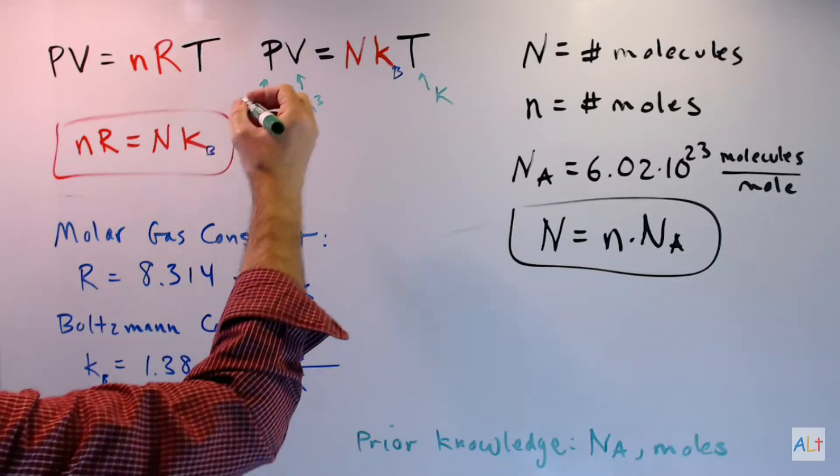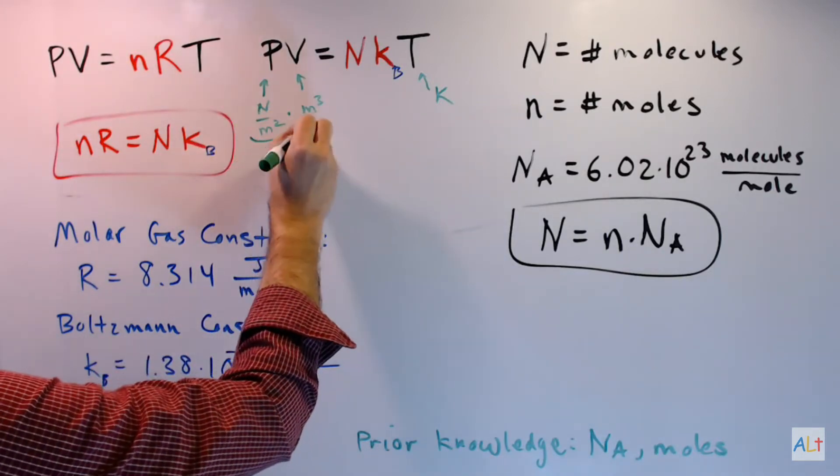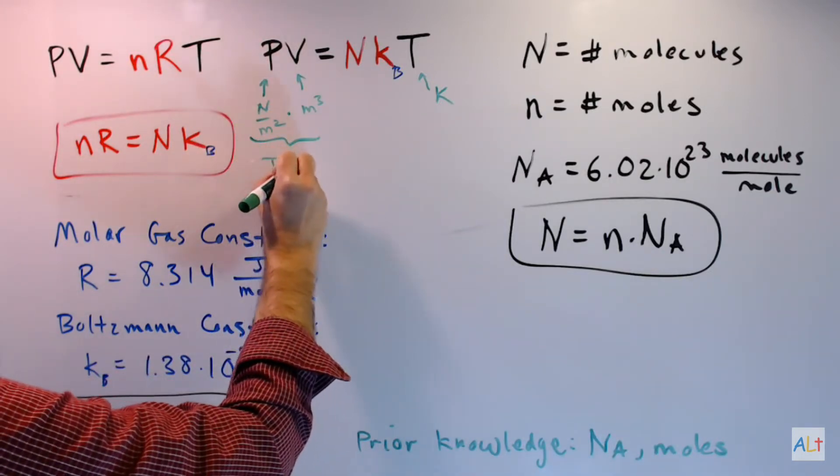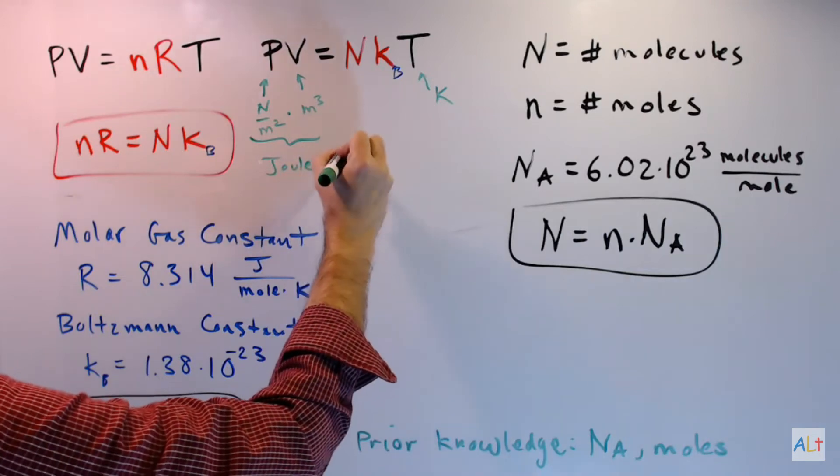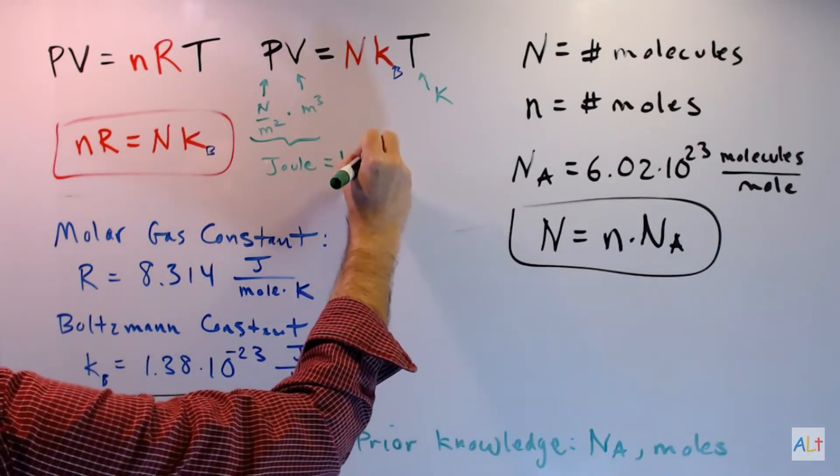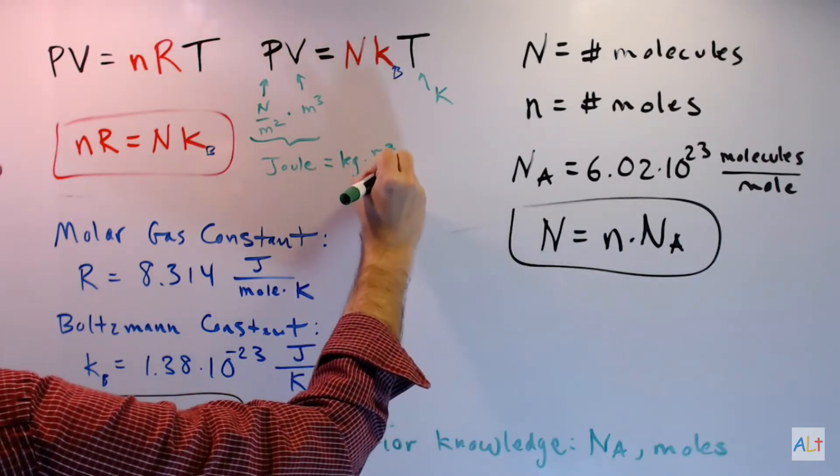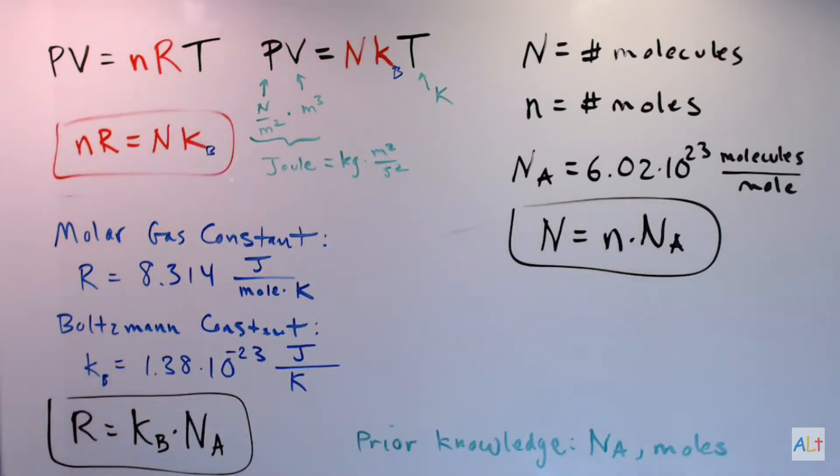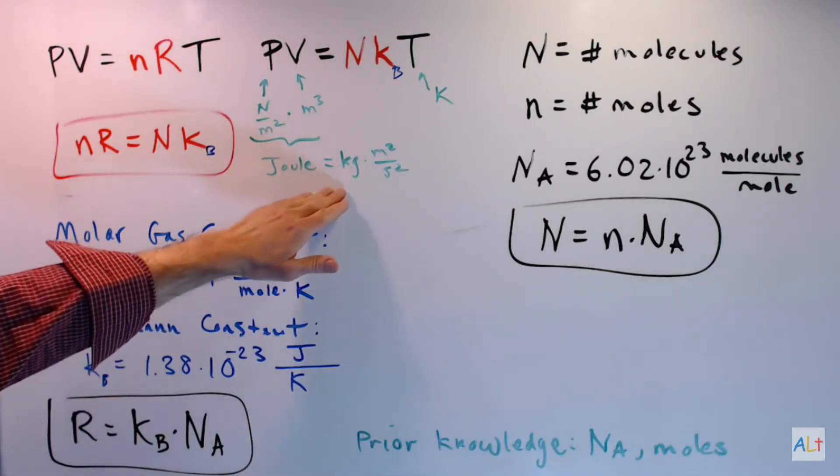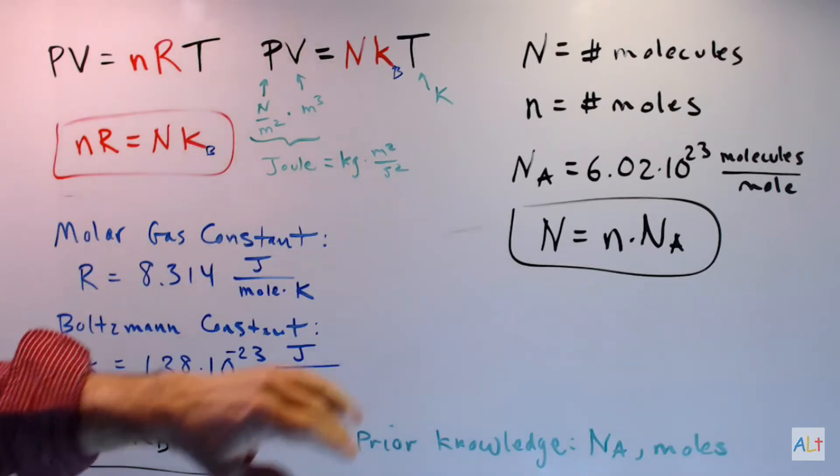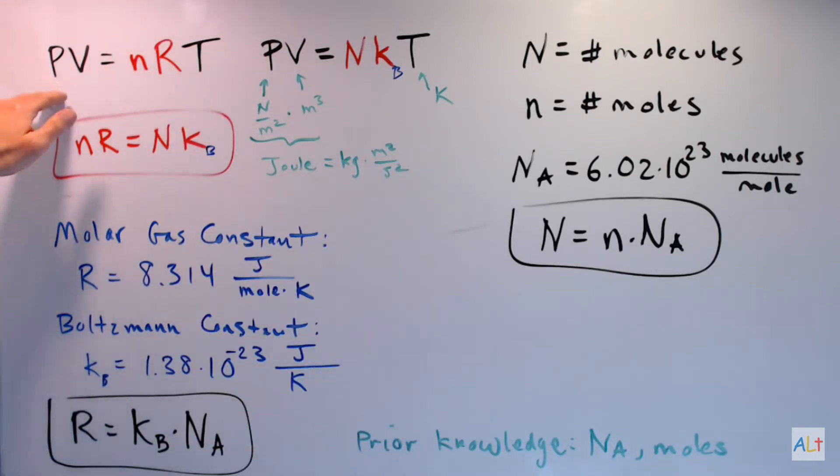Temperature is measured in kelvins. Now when you multiply pressure times volume, you get energy measured in joules. And a joule is equal to a kilogram times meters squared over seconds squared. If you have any trouble remembering this, just think of kinetic energy, one-half mv squared.